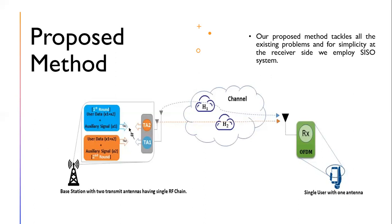Having discussed the existing problems, our proposed method tackles all of them. For simplicity at the receiver side, we employ a SISO (Single Input Single Output) system, meaning at the transmitter side we have only one antenna and at the receiver side we also have only one antenna.